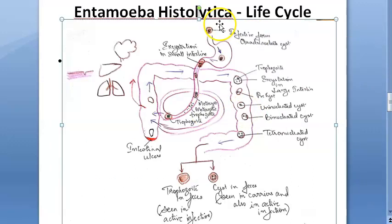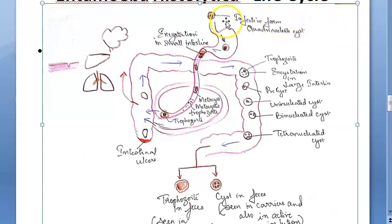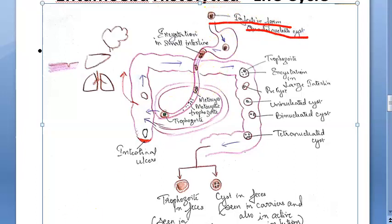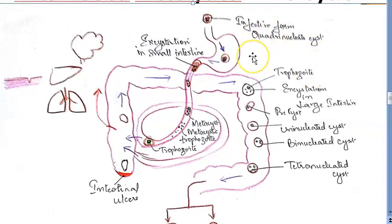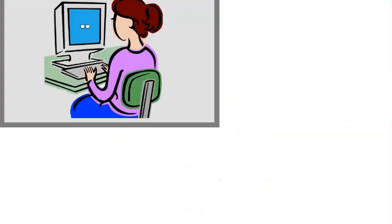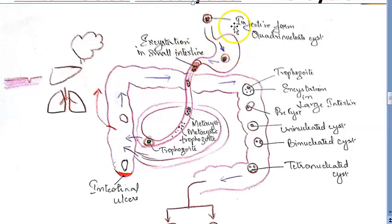Now for the life cycle — what exactly happens inside us. The infective form, the quadrinucleate cyst, is consumed. For example, someone ingested contaminated food or water and got this quadrinucleate infective form into their stomach.